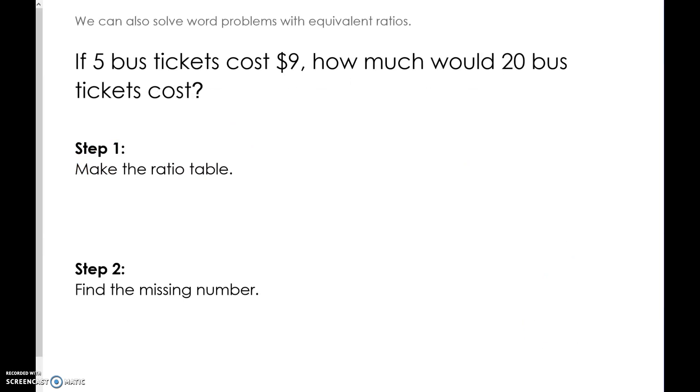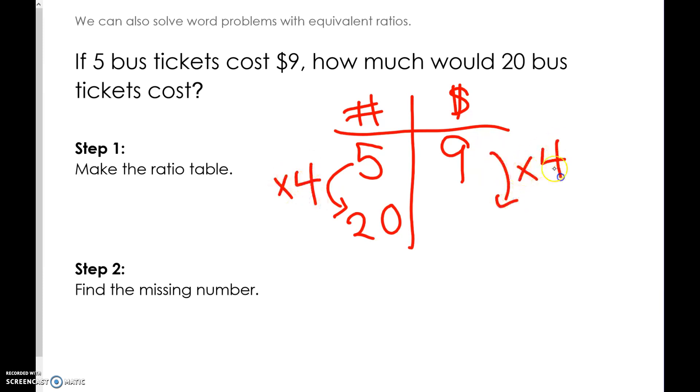5 bus tickets cost 9 dollars. How much would 20 bus tickets cost? We can make a ratio table: number of bus tickets and total cost. 5 bus tickets cost 9 dollars. To get 20 tickets, 5 times 4 is 20. 9 times 4 is 36. So 20 bus tickets would cost $36.